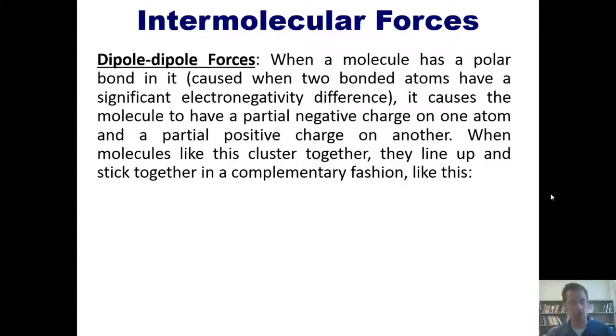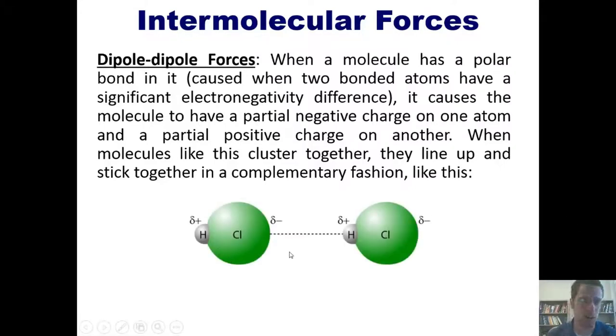When you have that kind of bond, it causes the molecule to have a partial negative charge on one atom and a partial positive charge on another. When molecules like this cluster together, they line up and stick together in a complementary fashion like this. This is the example of hydrochloric acid. Chlorine is much more electronegative than hydrogen, so it hogs the electrons towards itself, thereby giving it a very strong partial negative charge, leaving the hydrogen with a very strong partial positive charge.